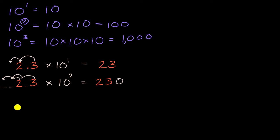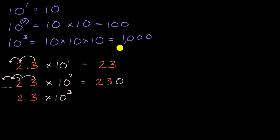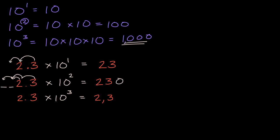If we multiply 2.3 by 10 to the third power, we shift everything three places to the left. 10 to the third is the same as multiplying by 1,000. The two shifts three places to the left and becomes 2,000. The three tenths shifts three places to the left and becomes 300. We then have zero tens and zero ones, so 2.3 times 10 to the third equals 2,300.